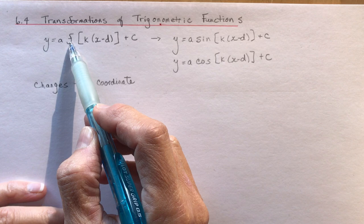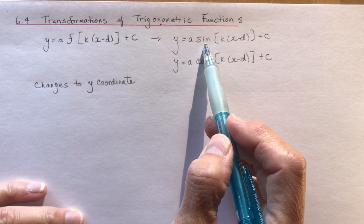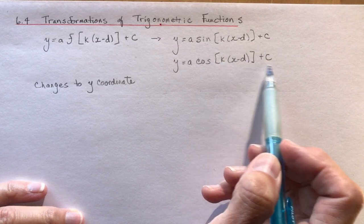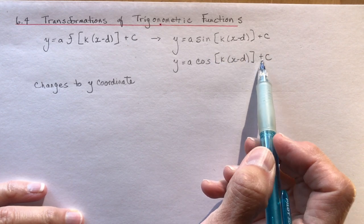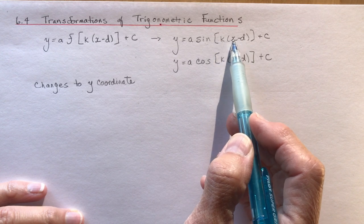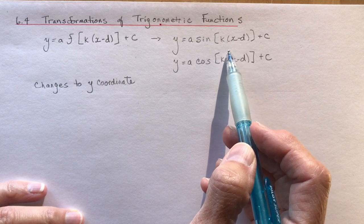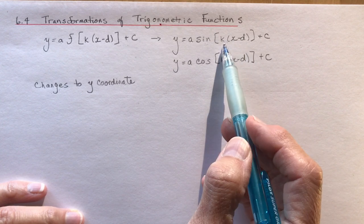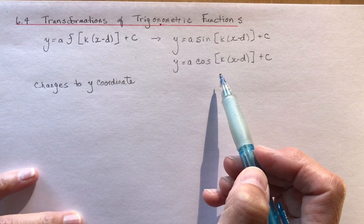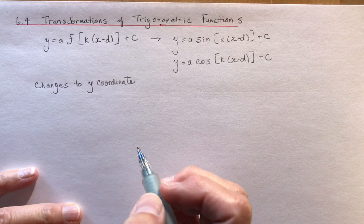We have a function a·f(k(x − d)) + c. If we apply that to the sine function this is what it would look like, and if we apply it to the cosine function it would look like this. You must always remember that k must be factored out — that's one little step that so many students get tripped up on. Don't forget: isolate and factor out the k.